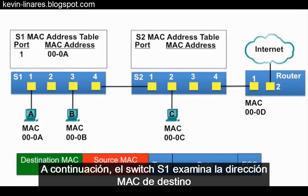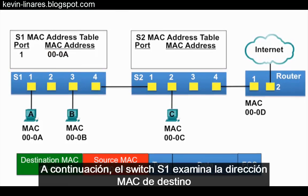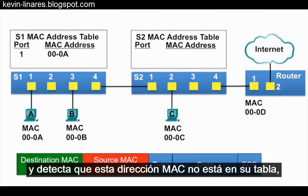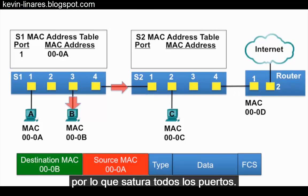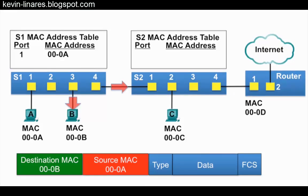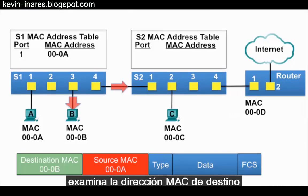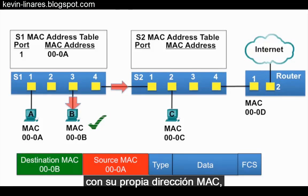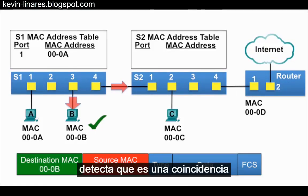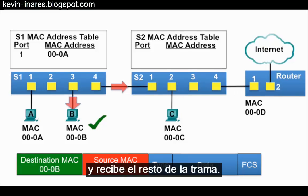Next, switch S1 examines the destination MAC address and notices that this MAC address is not in its table, so it floods it out all ports. PCB receives the Ethernet frame, examines the destination MAC address against its own MAC address, and notices that there is a match and receives the rest of the frame.